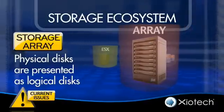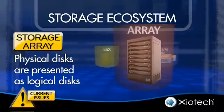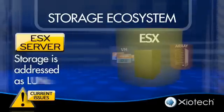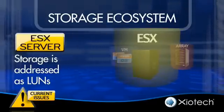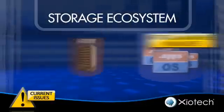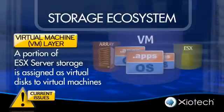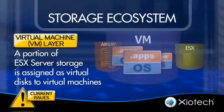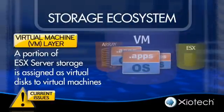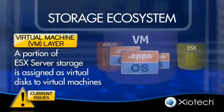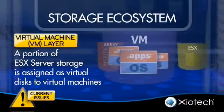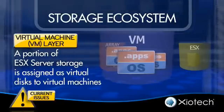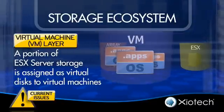The three distinct layers are: the storage array, where physical disks are presented as logical disks; the ESX server, where storage is addressed as LUNs; and the virtual machine VM layer, where a portion of ESX server storage is assigned as virtual disks to virtual machines.